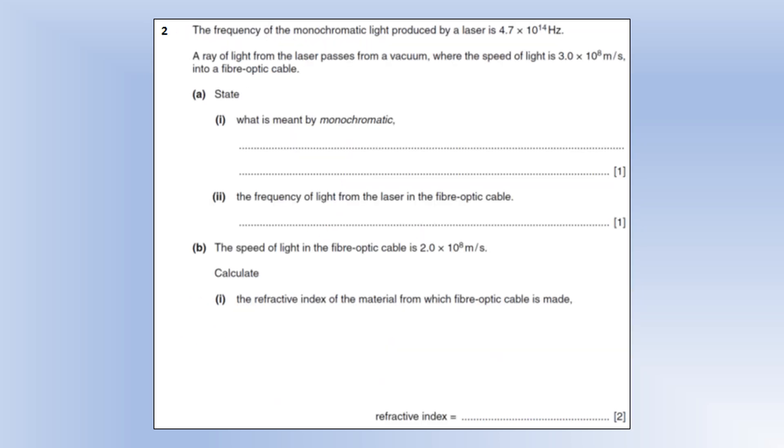Frequency of monochromatic light is produced by a laser at 4.7 times 10 to the 14 Hertz. A ray of light from the laser passes from a vacuum where the speed of light is 3 times 10 to the 8 meters per second. State what is meant by monochromatic? Well it means light of only one wavelength, or we could also say one frequency - they're the same thing.